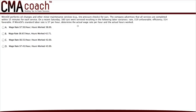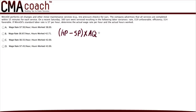To answer this question we have to work out the price variance, also known as the rate variance. The price variance formula I would highly recommend that you memorize for the exam is: open parentheses, actual price minus standard price, close parentheses, times actual quantity — and this equals the price variance.